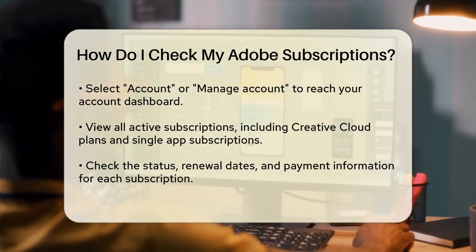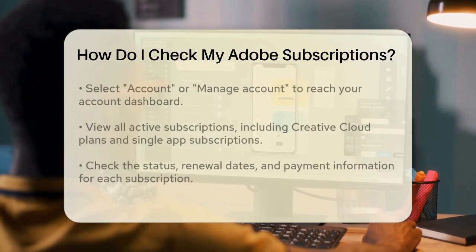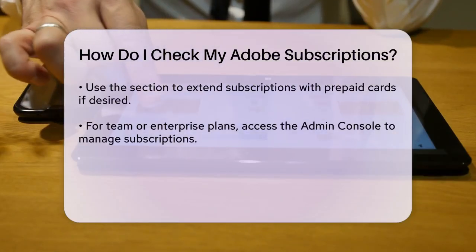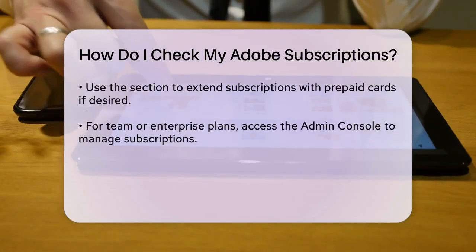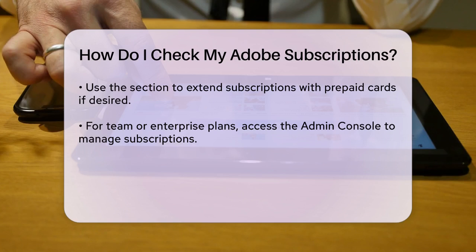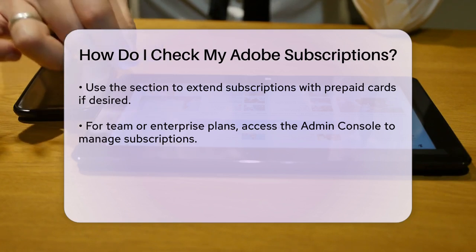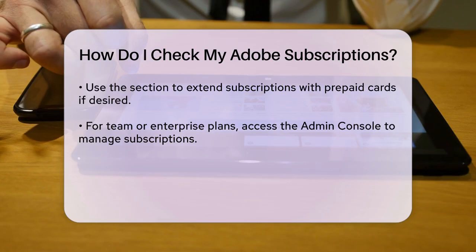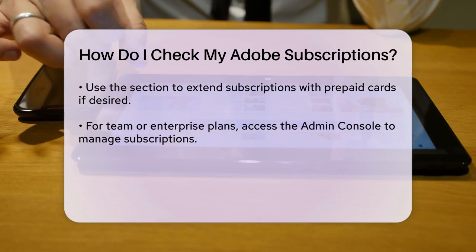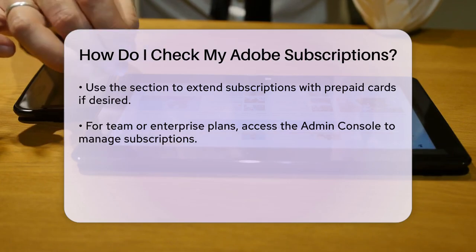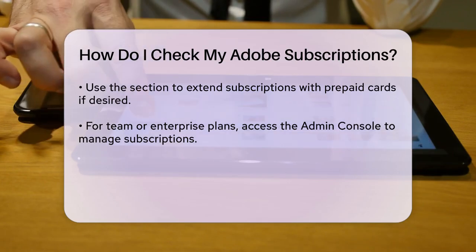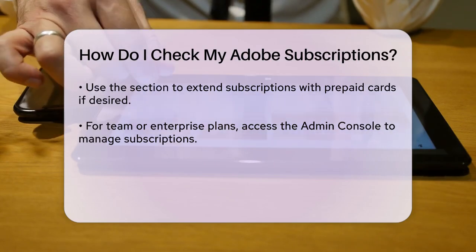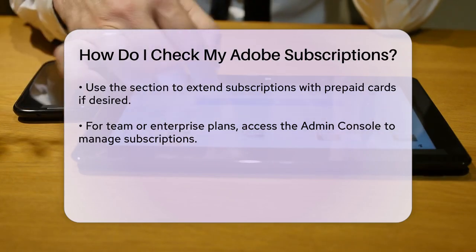If you're part of a team or enterprise plan, the process is slightly different. You'll need to go to the admin console of your Adobe ID account to manage your team subscriptions. Here, you can update payment details, contact your reseller for any changes to your Adobe Value Incentive Plan (VIP), and manage other aspects of your team subscriptions.